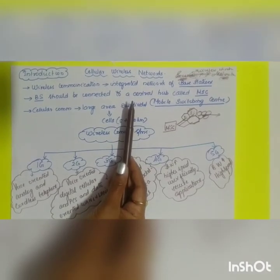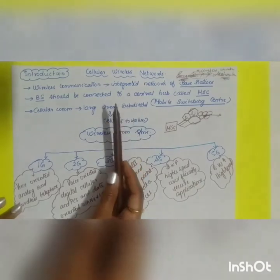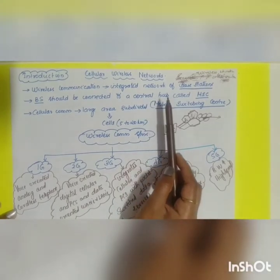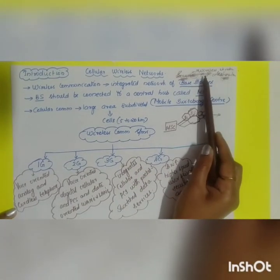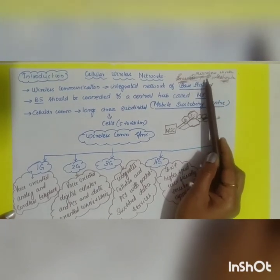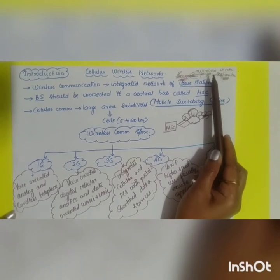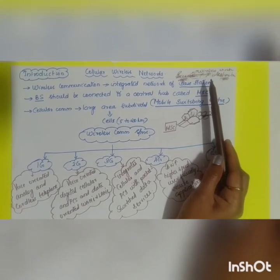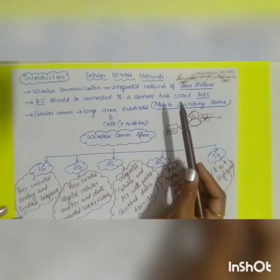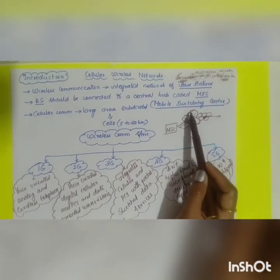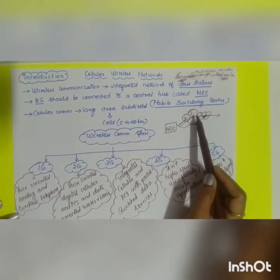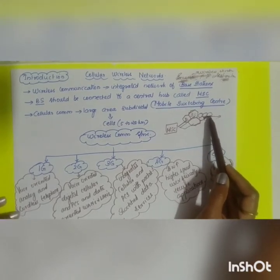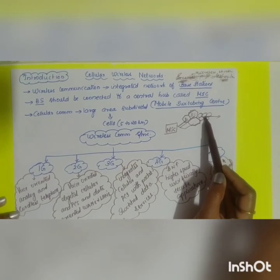The first topic in module 5 is cellular wireless networks. A cellular wireless network is defined as a communication network where the link between the source and the destination is wireless in nature. The main concept relies on dividing the geographical area into small areas called cells. Cells are generally hexagonal in shape in order to cover a large area — if cells were circular, small gaps between them could not be covered.